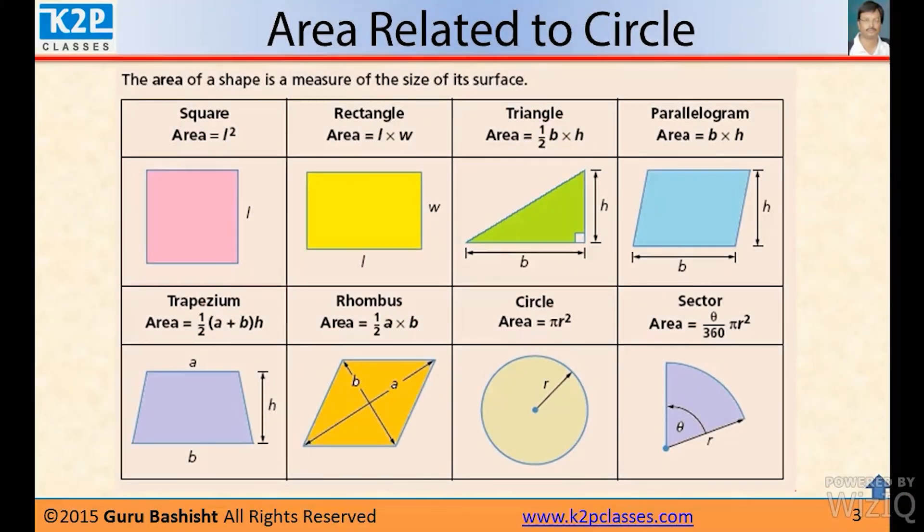The area of a shape is a measure of the size of its surface. For a square, the size is L, the area is L². For a rectangle, it is L × W, where L is the length and W is the width. For a right-angle triangle, if this is the base and this is the height, the area of triangle is ½ base × height. For a parallelogram, area is base × height. For trapezium, area is ½ sum of the parallel lines × height. For rhombus, area equals ½ the multiplication of its diagonals.